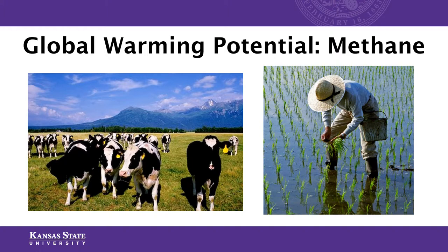Although methane is potent, its effect is relatively short-lived, so we can eliminate it from our atmosphere quicker. However, scientists are becoming increasingly concerned about a positive feedback mechanism: in Arctic regions, permafrost — ground that has never thawed before — is now thawing due to warmer temperatures. As it thaws, it releases trapped methane into our atmosphere. Scientists are concerned that as more permafrost thaws, we will see larger volumes of methane released.